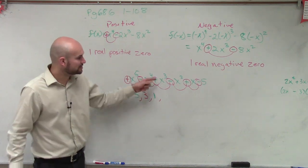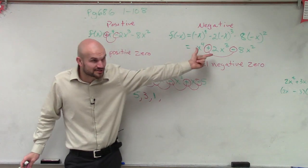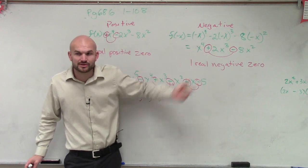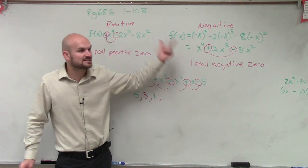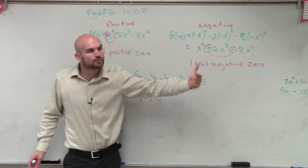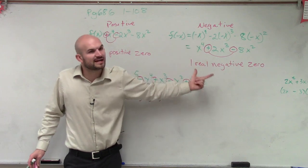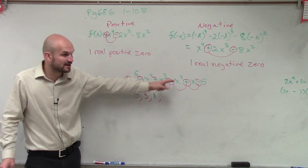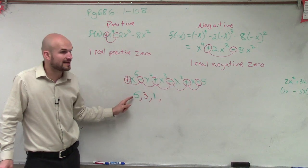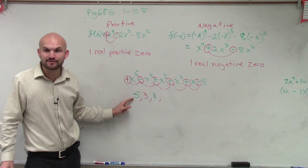If the function looks something like this, you guys can see, obviously, there's only one variation. So that's the number of positive zeros, but that's not the rule. The rule doesn't say how many zeros, how many variations, that's the number of zeros. The rule says the number of variations minus an even number. So if I have five variations, it could be five, or it could be minus an even number.